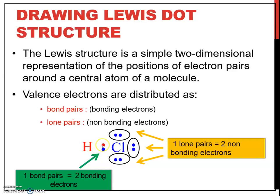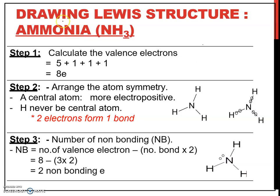For example, one electron is shared from hydrogen and another electron is shared from chlorine. For lone pairs, one lone pair has two electrons — two non-bonding electrons. To draw a Lewis structure, for example, ammonia NH3: the first step is to calculate the valence electrons. For nitrogen, there are five valence electrons. Hydrogen has one valence electron times three. So altogether there are eight valence electrons.